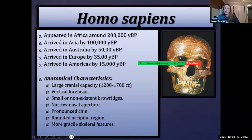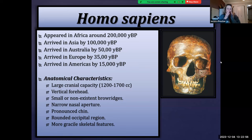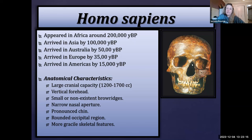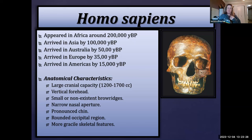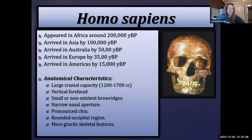The nasal aperture is the opening where the nose would have been — most of the nose is cartilage that doesn't preserve in the fossil record. Compared to Neanderthals, Homo sapiens have a relatively narrow nasal aperture. We have a pronounced chin, which is unique to Homo sapiens — we are the only species with this protruding mandibular symphysis, also called mental protuberance. The occipital region is much more rounded than in Neanderthal or Homo erectus, and the post-cranial skeleton is relatively gracile — longer and lankier.